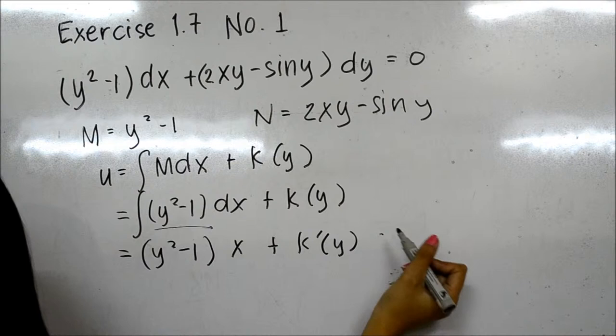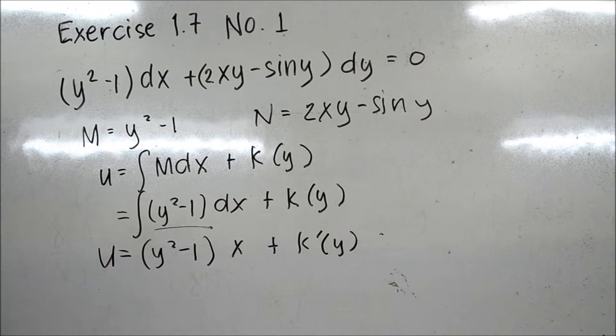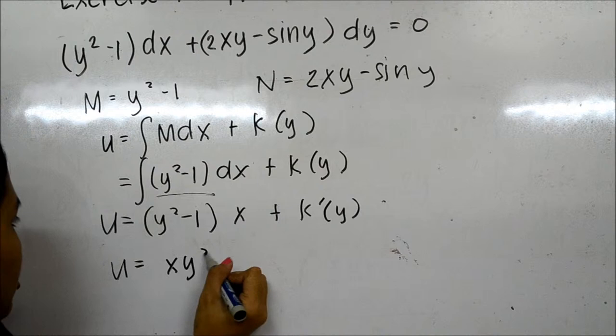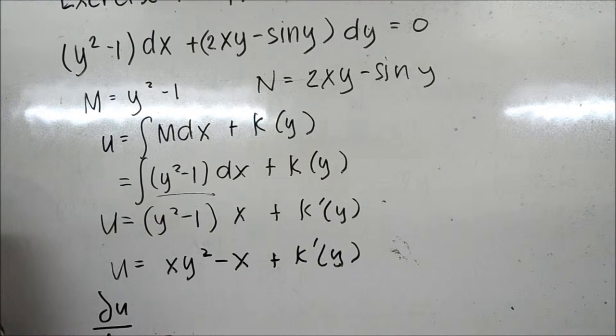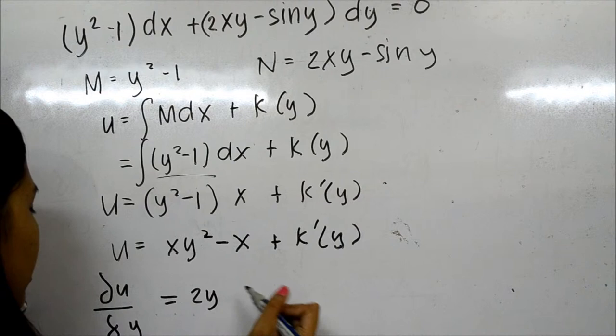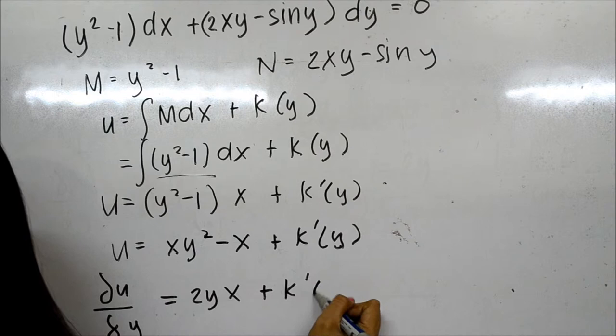Next, we distribute to get u = xy² - x + k(y). Then we take the partial differentiation of u with respect to y, which gives 2xy + k'(y).